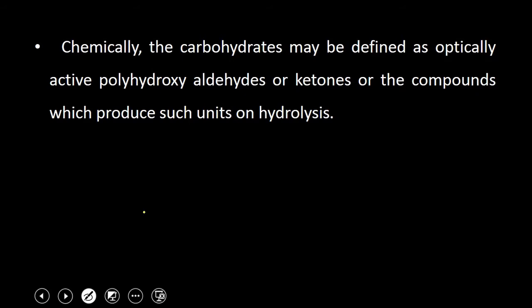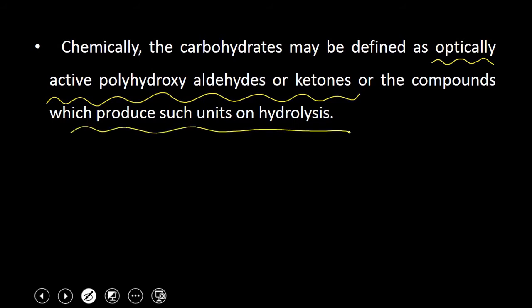How can we define carbohydrates then? Carbohydrates chemically may be defined as optically active polyhydroxy aldehydes or ketones, or those compounds which produce such units on hydrolysis. So carbohydrates are those optically active polyhydroxy aldehydes or ketones, or the compounds which produce such units on hydrolysis.